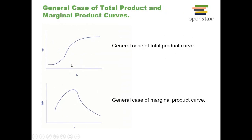We can generalize this — these patterns hold across industry after industry, over time. Generally speaking, in the short run, total product looks like an S-curve that flattens out and might even start to decline. Marginal product shows a hump shape and then a downward slope.